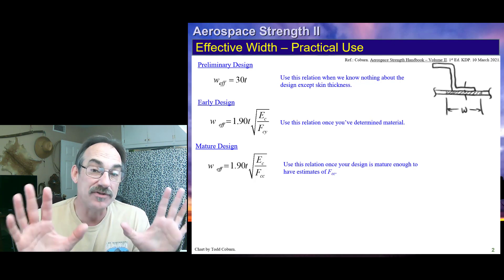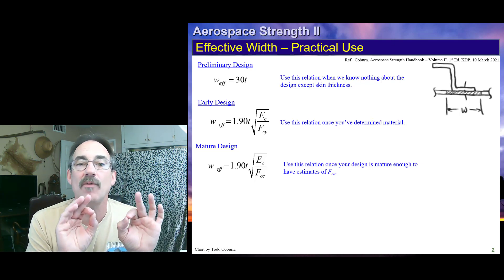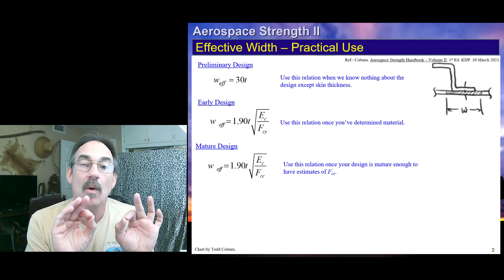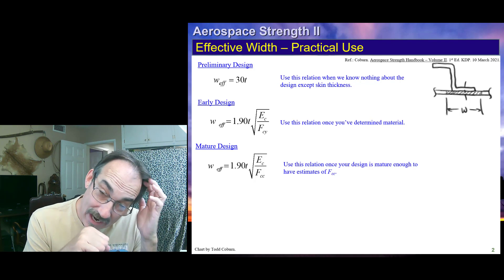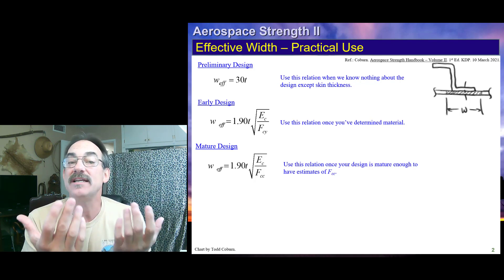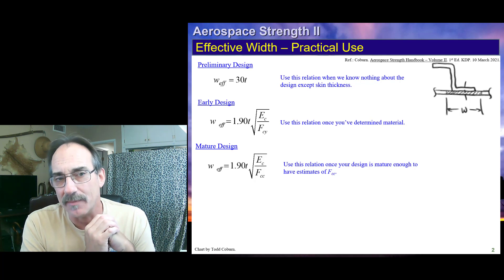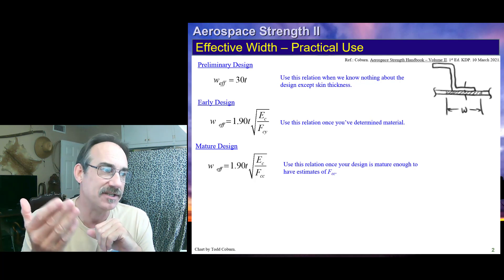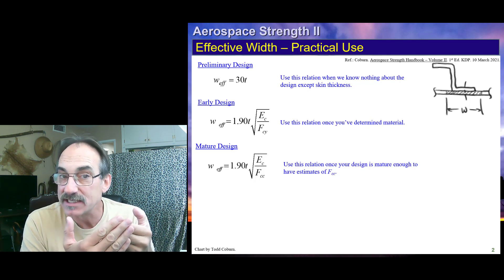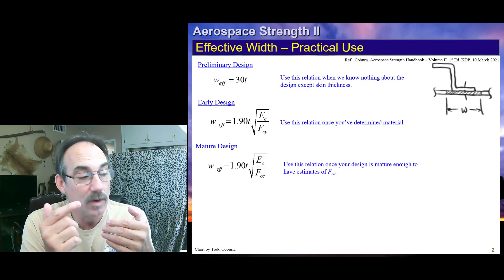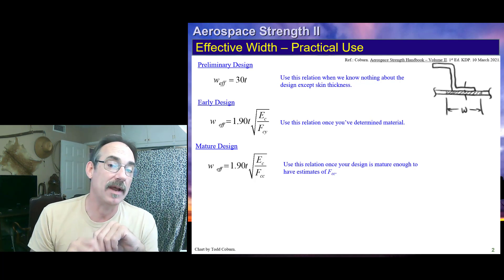Later in the design, we've chosen materials. We can use our early design formula, which means it's the same form of the detailed formula, 1.9T square root of E_C over F_CY. In this case, since we know material, we'll plug in F_CY as an estimate of the stringer's load carrying capability in compression. This is a gross simplification, and a much better estimation of the compressive capability of the stringer itself would be F_CC, which is what we're going to use for the mature design equation.